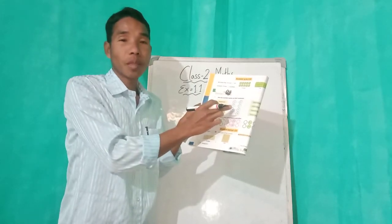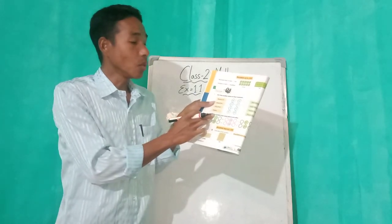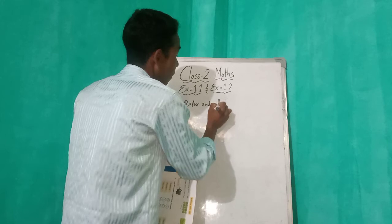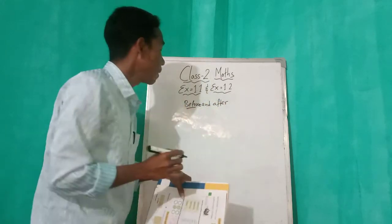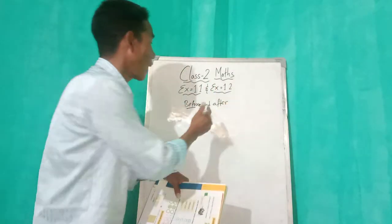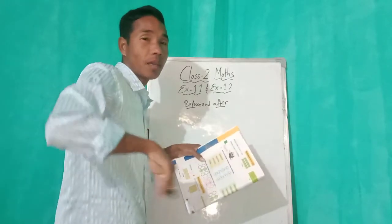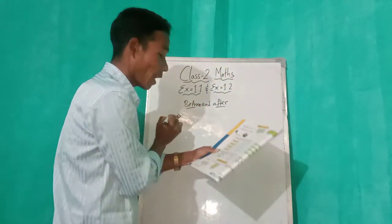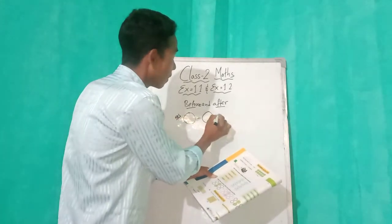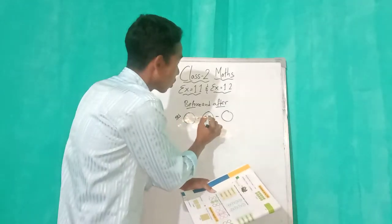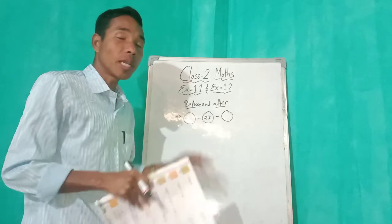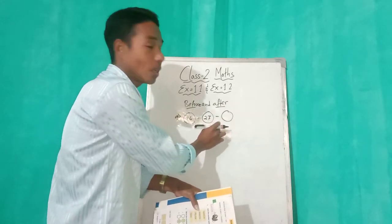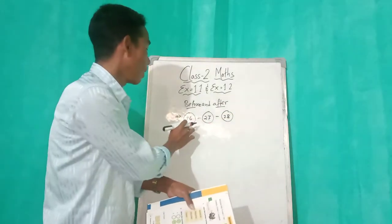Number two: write the numeral that comes before and after. Before means what comes before, and after means behind. In question A, we have the number 27 in the middle. Before 27, which number comes? 26. And after 27, which number comes? 28. So before 27 is 26, after 27 is 28.